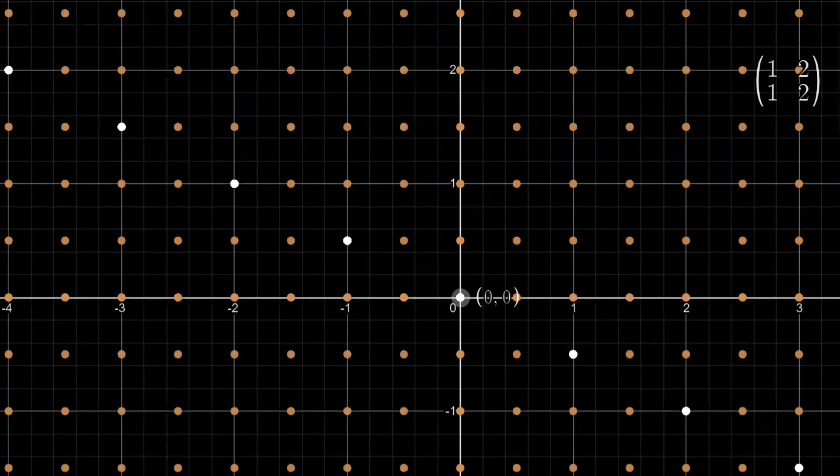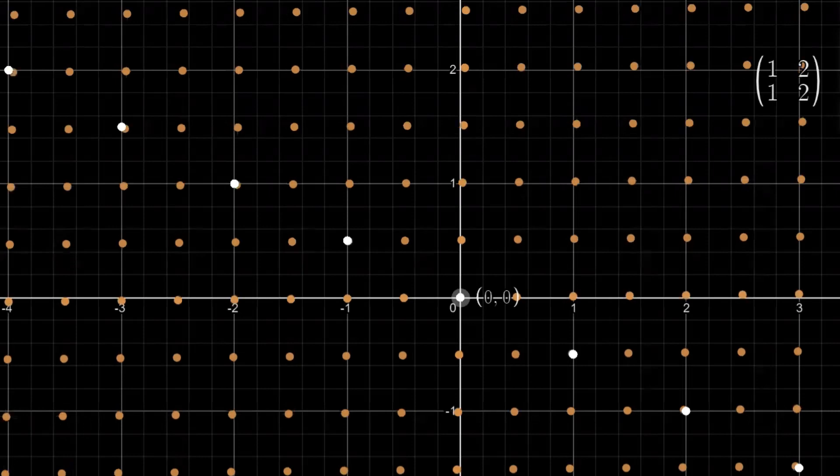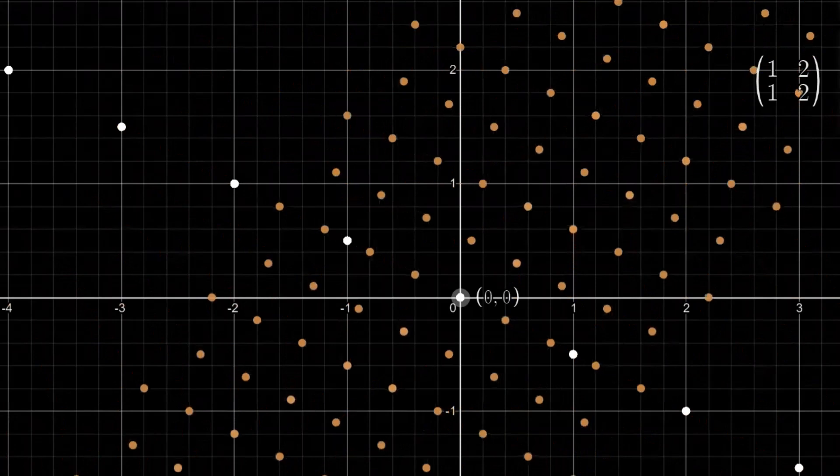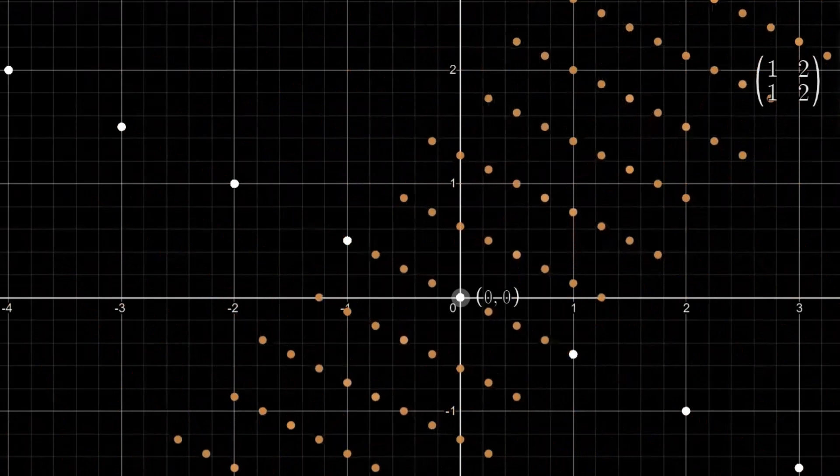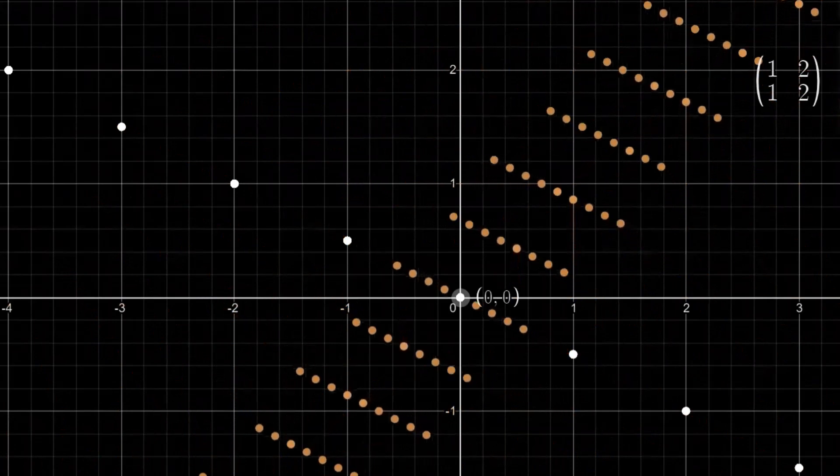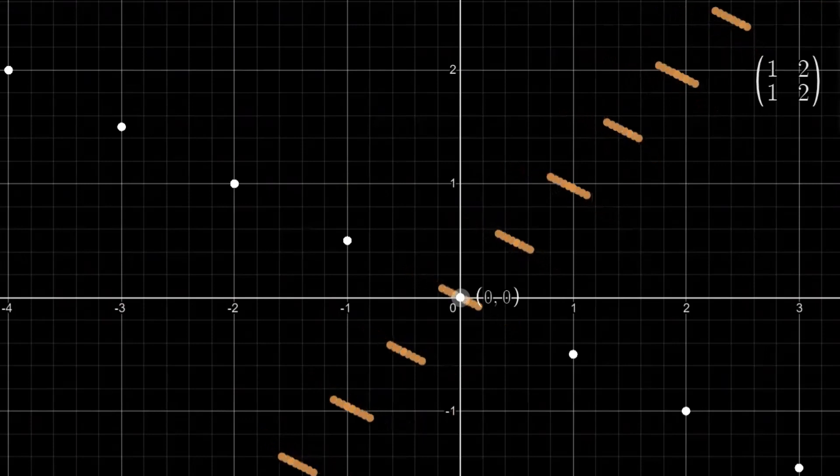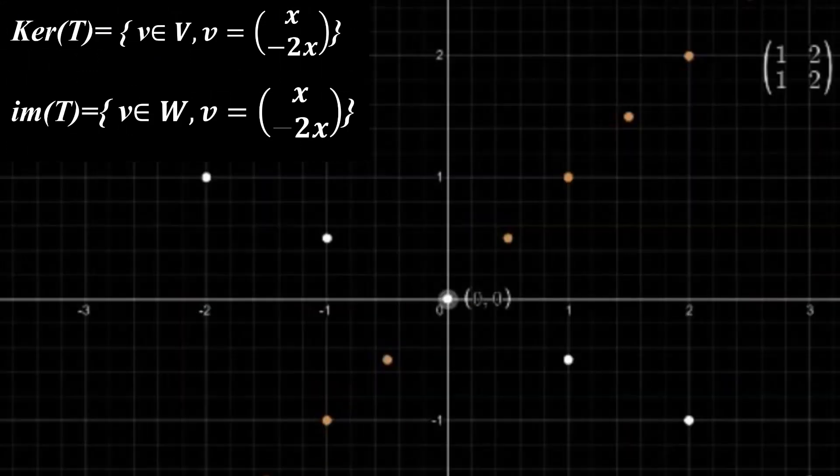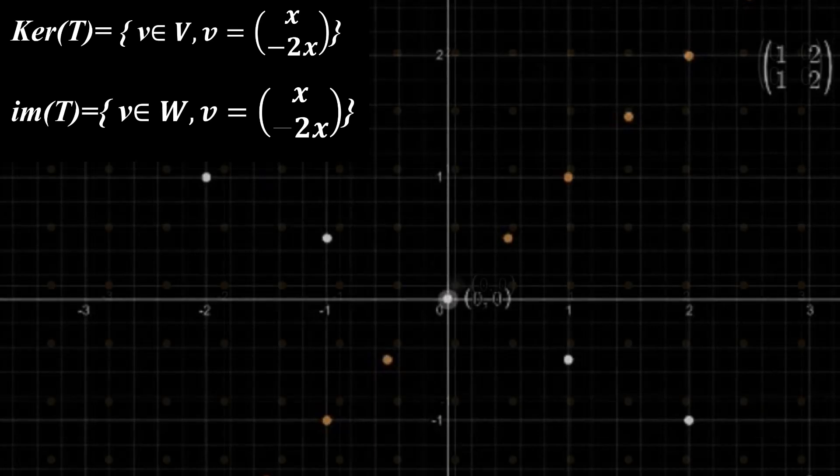Looking at this transformation, one can observe that all of the vectors that fall on the line y equal minus 2x got transformed to the zero vector, which means the kernel is the set of vectors with coordinates x and minus 2x. That's infinity many vectors, right? The image set now is clearly the vectors that land on the line y equal to x.